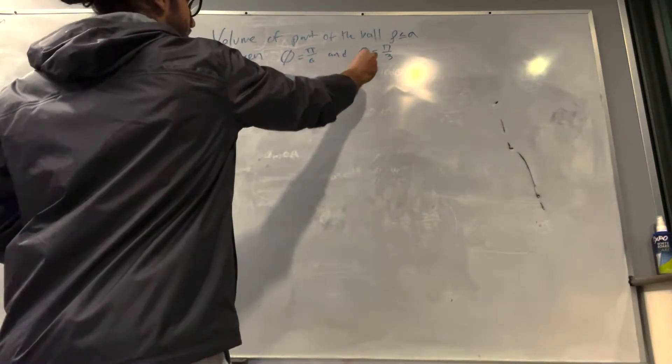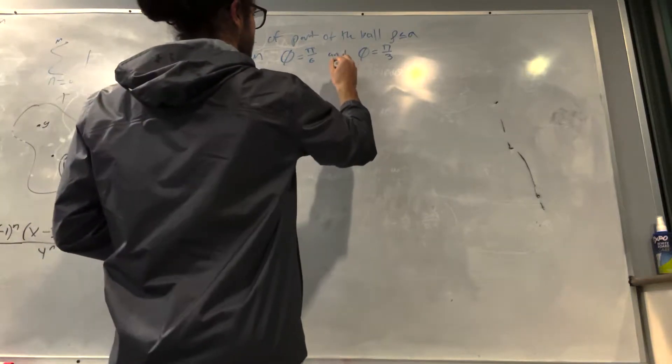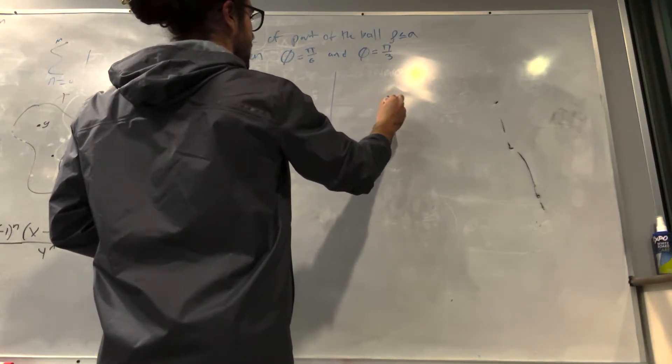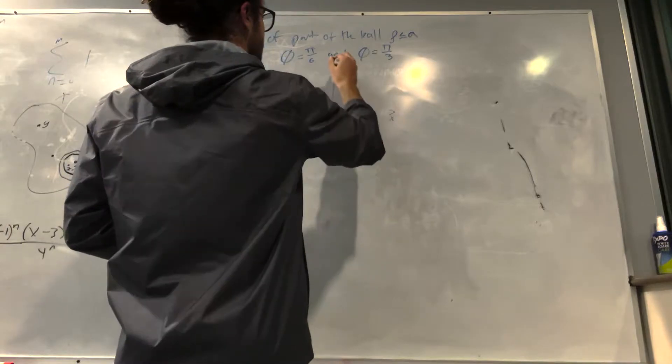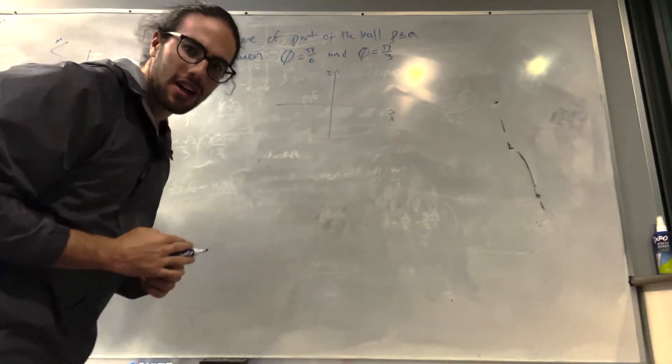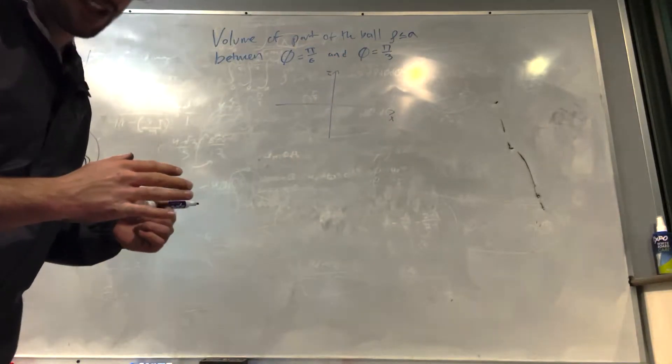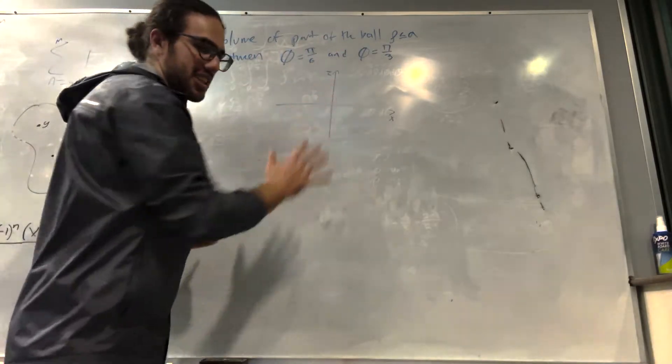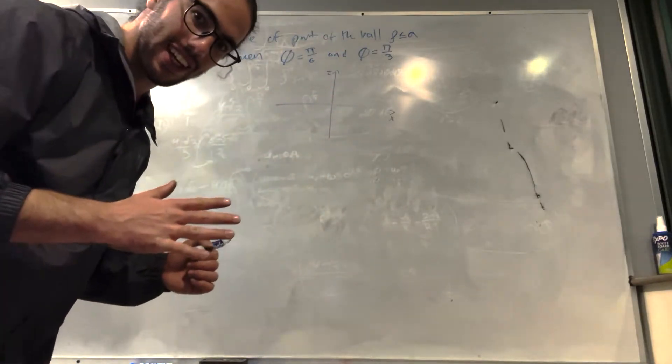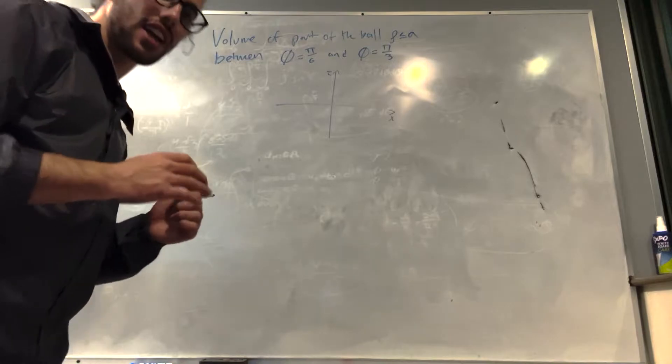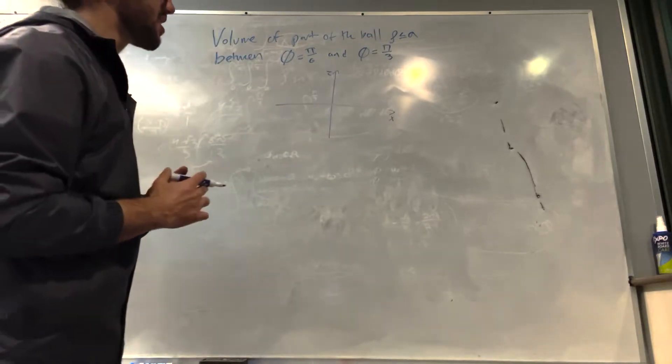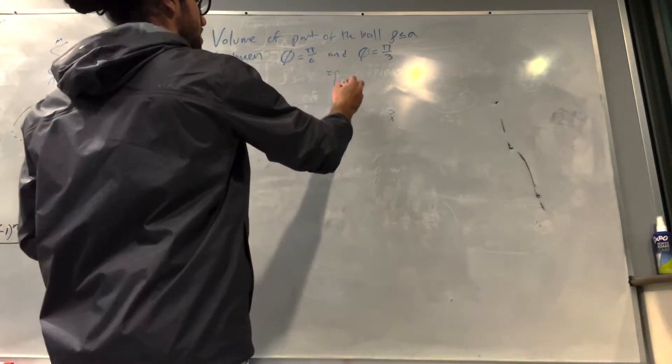Phi goes from pi over 6 to pi over 3. So let's draw this. This is x and this is z. So what I'm doing here is I'm setting y equal to 0, and basically it's plastering it just like onto a surface. This is what you'd see at the radius. So this is just kind of like you're looking straight at it. It makes it a lot easier to visualize.